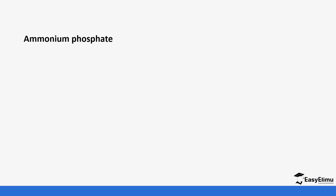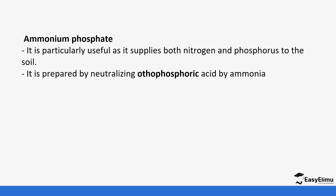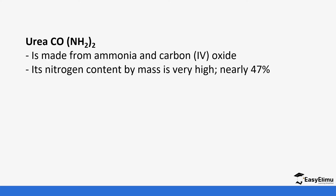Next is ammonium phosphate, which is useful in supplying both nitrogen and phosphorus to the soil. Phosphorus is also important for the soil. It is prepared by neutralizing phosphoric acid with ammonia — ammonia reacts with phosphoric acid to form ammonium phosphate.